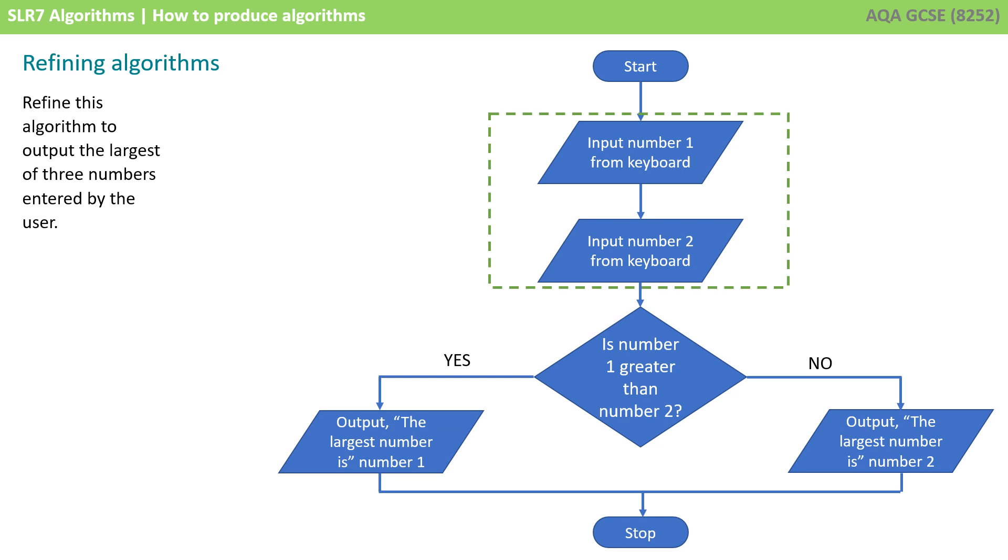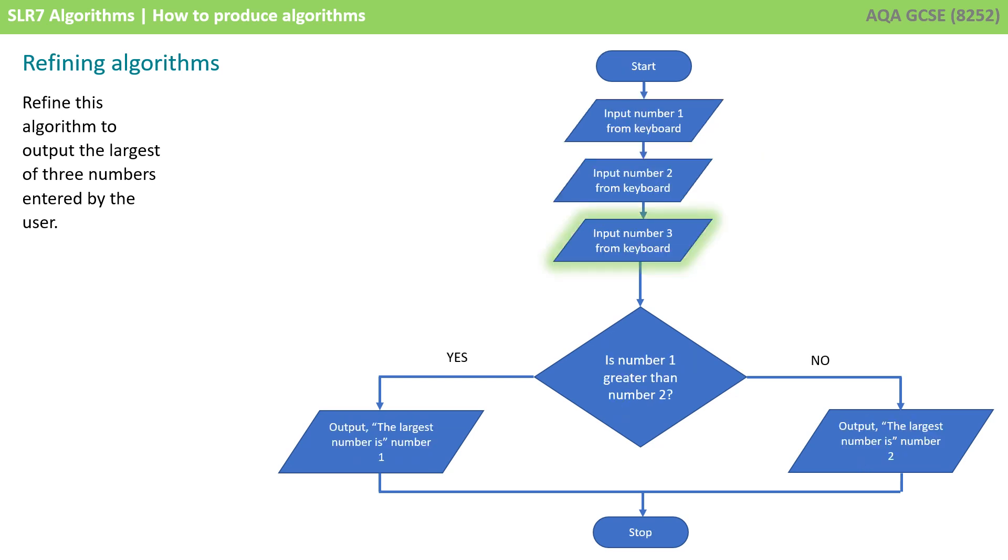You would first need to identify the areas of the existing algorithm which need modifying. Well, we would clearly need to modify this top section to take in an extra input from the user, which you can see we've done here. And we would also need to modify this bottom section. Now, this will require a little more thought, so why don't you pause the video and see if you can sketch out with a pen and paper how you would alter the bottom part of this flow diagram.